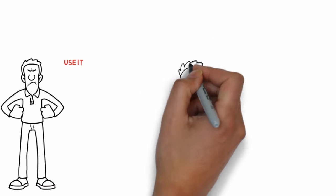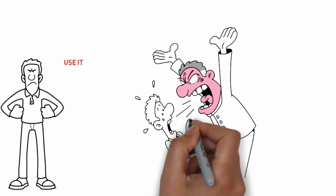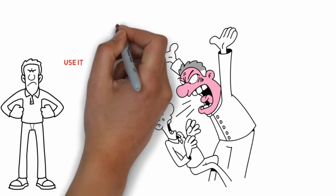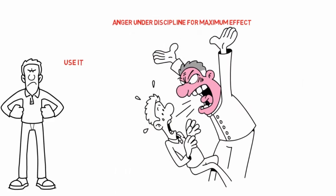I'm thinking of that time when Martin Luther King was accused of raising a lot of anger in his movement. What he said was, no, what we did was we expressed anger under discipline for maximum effect.